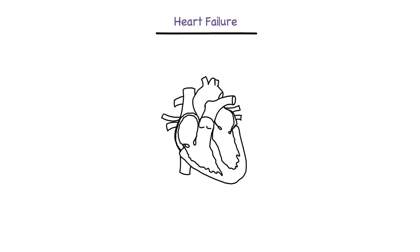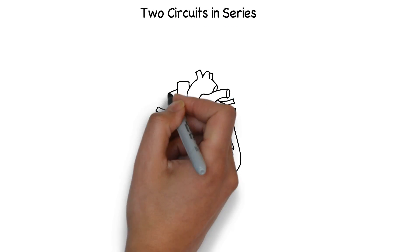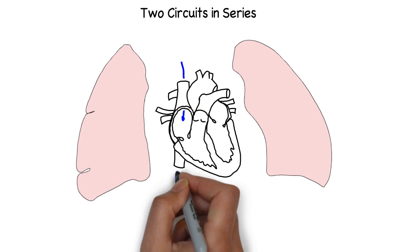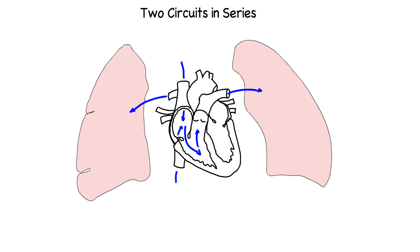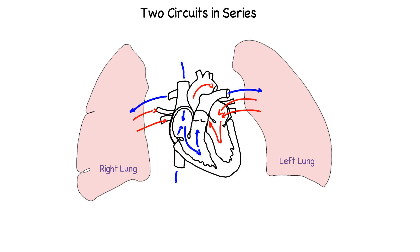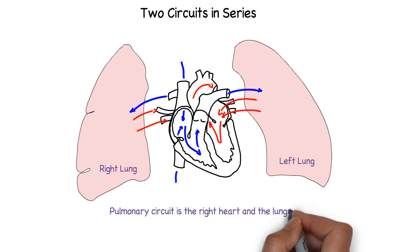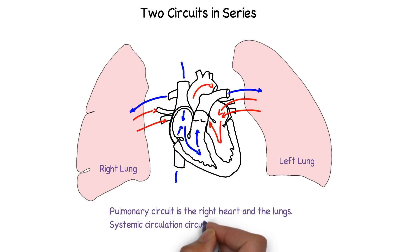Our heart is made up of two pumps: the right and the left heart. The right heart receives blood from the body and pumps it to the lungs, while the left heart receives blood from the lungs and pumps it to the body. This setup separates the right and left heart into two separate circuits joined in series: the pulmonary circuit and the systemic circulation.